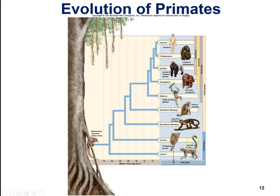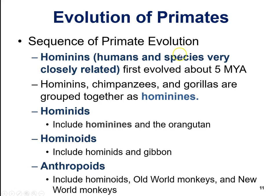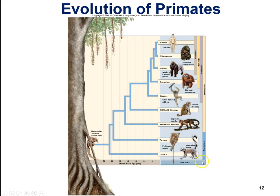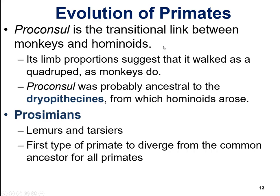Tarsiers, lemurs, and their relatives are prosimians. Looking at the phylogenetic tree of all primates, you can see the different groups arranged from most simple to more complex. It's important to know these terms — they're listed here and easier to interpret on the phylogenetic tree.